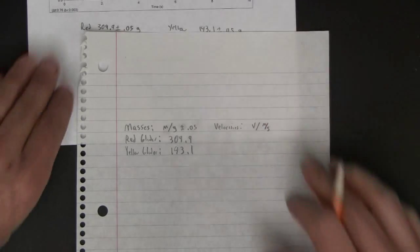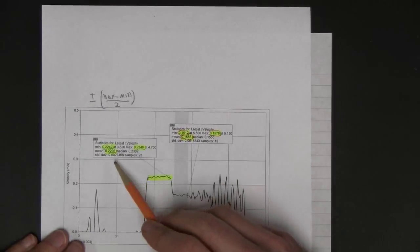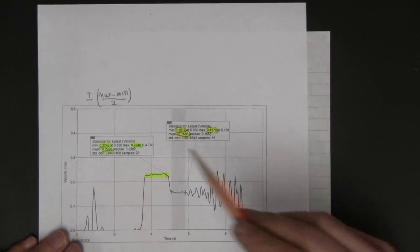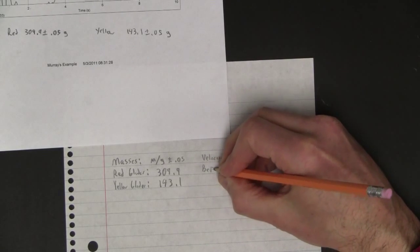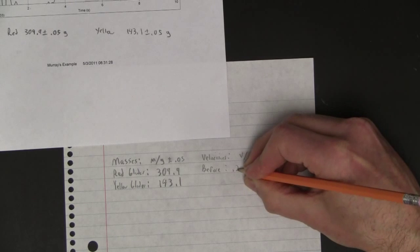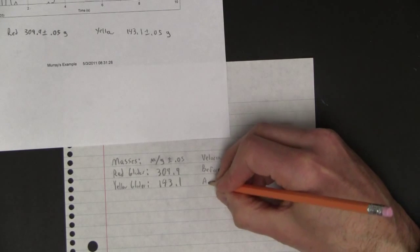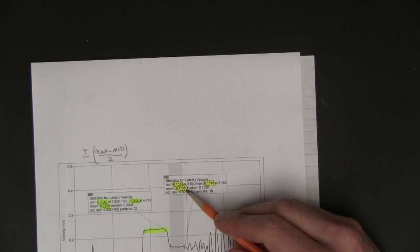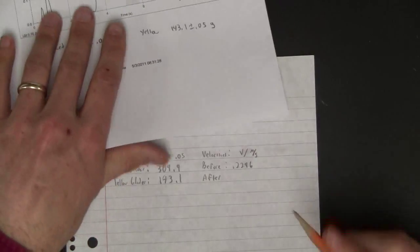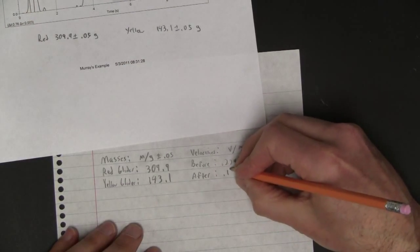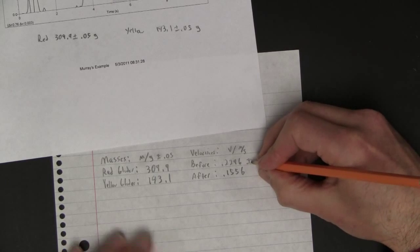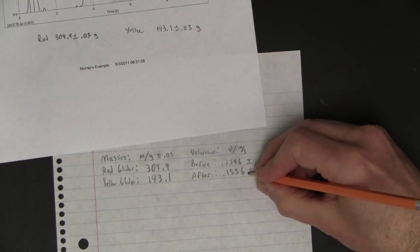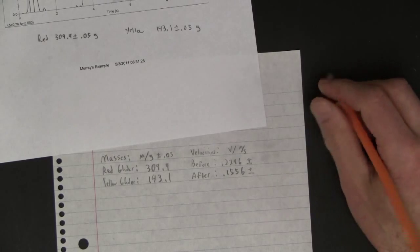And then the velocity before, I'm just going to read it off of there. So before, 0.2296, after, and again, I'm just going to read the mean velocity off of there, 0.1556. And then I need to figure out what the uncertainty is. It's plus or minus something, plus or minus something. So what is that?